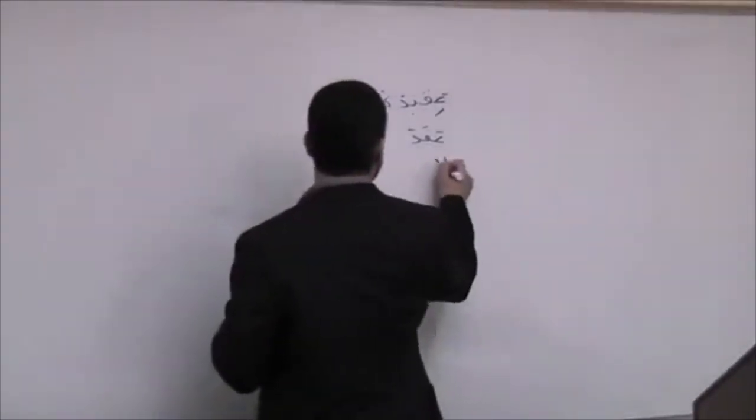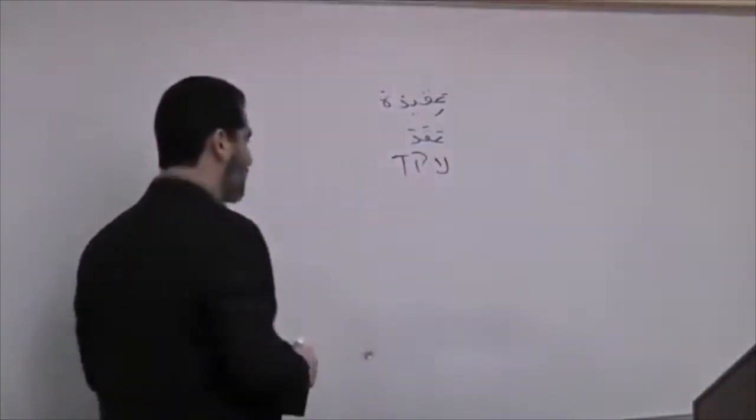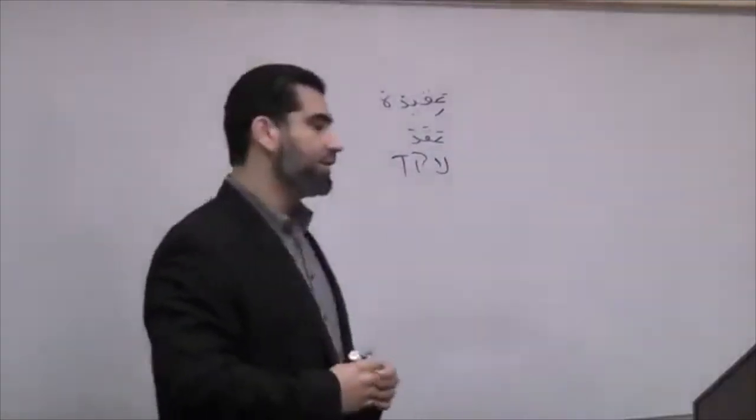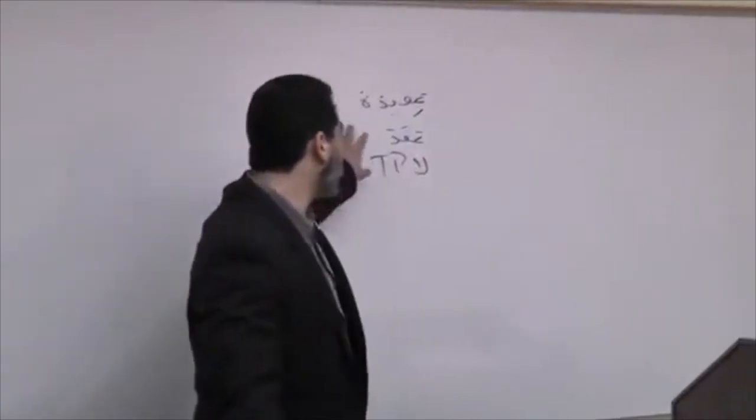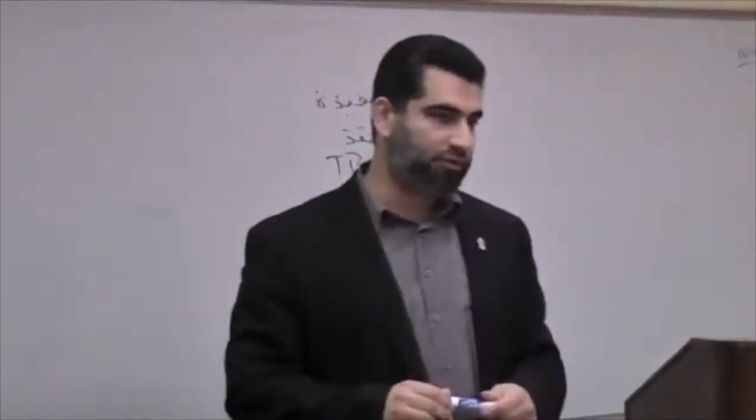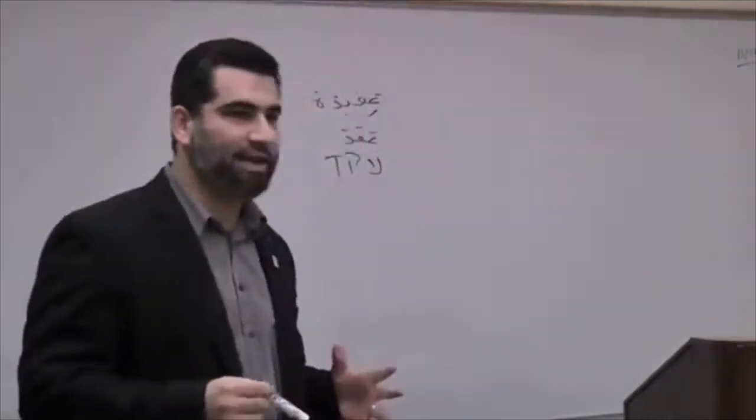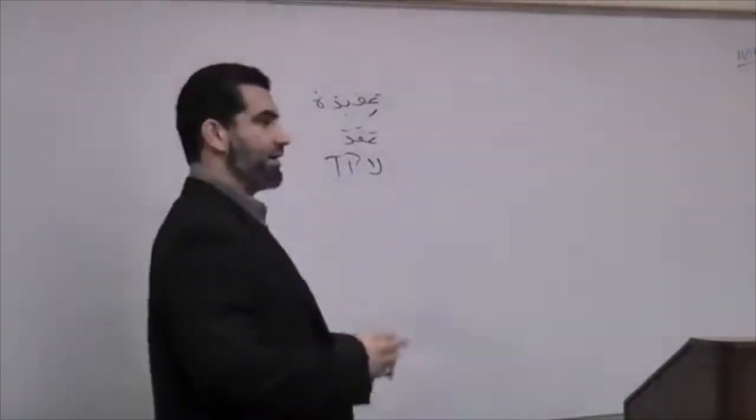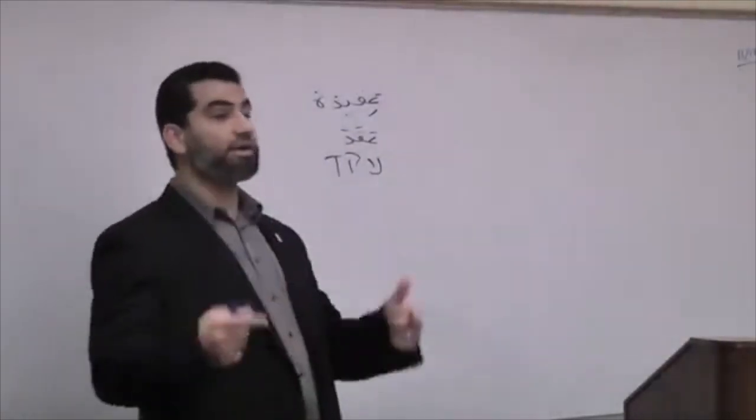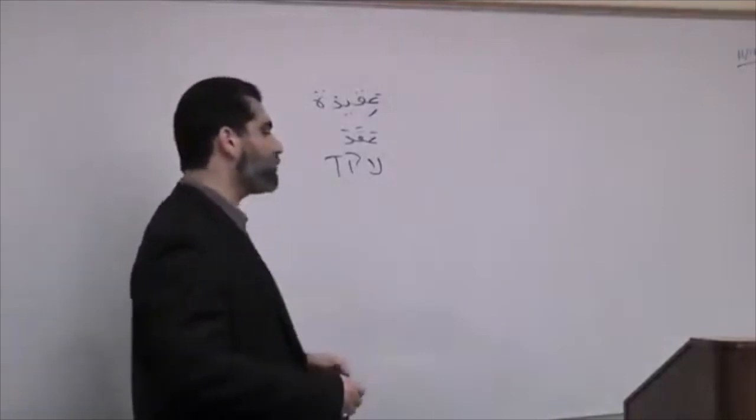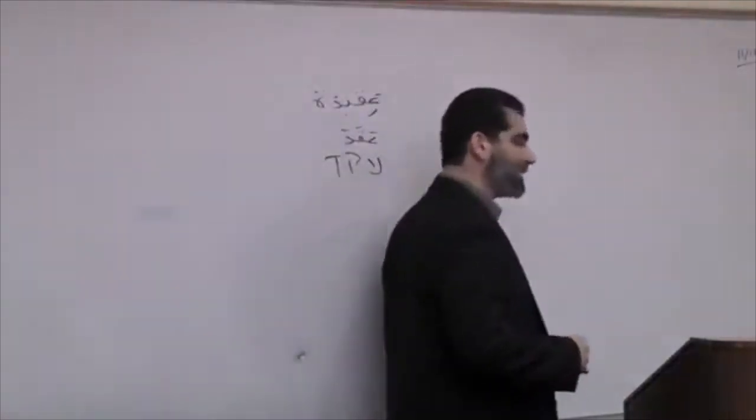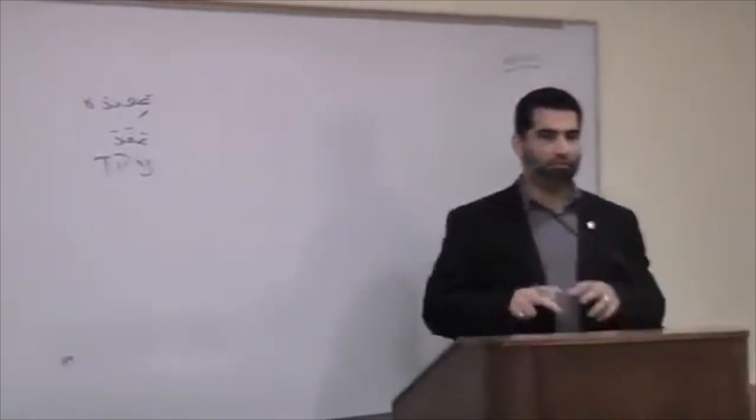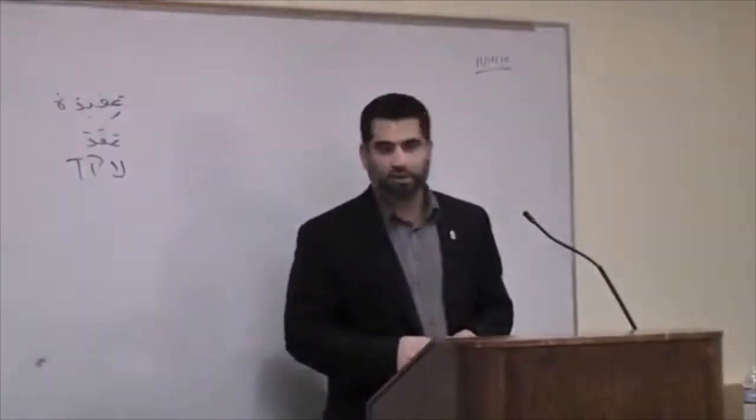The cognate of this in the Hebrew is the same letters, ayin, qof, and talit. This word aqida actually comes directly from a word in the Hebrew Bible. In Genesis chapter 22, Abraham binds his son Isaac, and the Hebrew says Ya'akod, then he bound his son. That passage is called Ha'akida, the binding of Isaac.